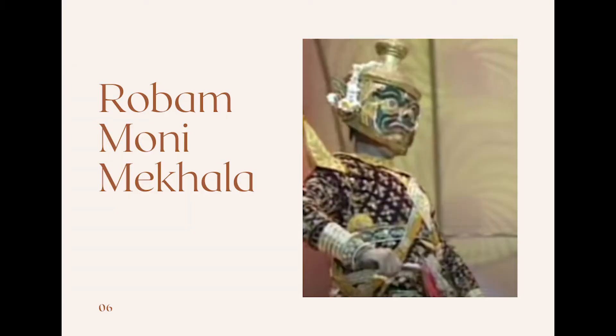The next role in Cambodian Classical Dance is the Ye. Ye means giant or demon. We'll be watching a clip of one of the dances it appears in, which is Rohan Moni Mekala. This dance is about the fight between Riem Eiso, who is a demon of the storms, and Moni Mekala, who is the goddess of the seas. Riem Eiso is the Ye character and Moni Mekala is the Neerong character in this dance, and they're fighting for control of Moni Mekala's magical crystal ball, which she is trying to protect from Riem Eiso.